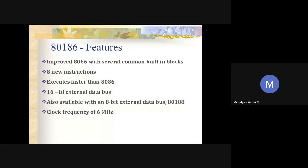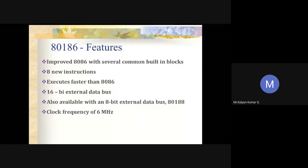In the case of 8086, we don't have an inbuilt clock generator, but in 80186, we have an inbuilt clock generator, system controller, inbuilt interrupt controller, DMA controller, and timers — all built in. It is an improved version of 8086. In addition, the instruction set has eight new instructions, and the clock frequency of 80186 is higher than 8086, making it faster.